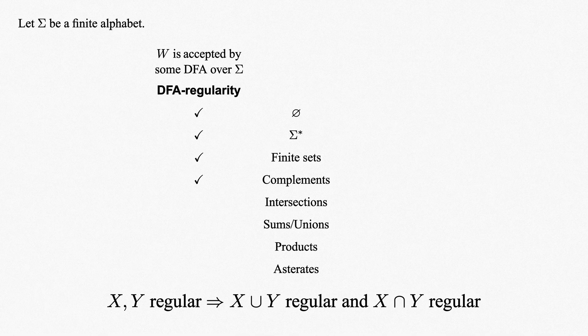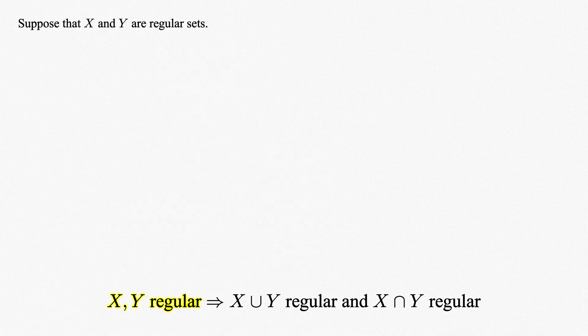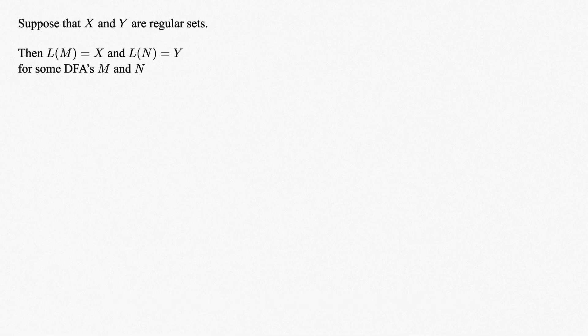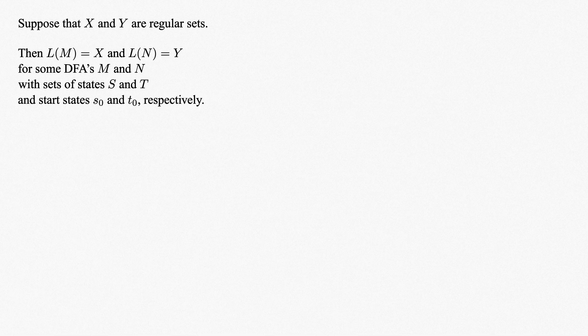Our tool for showing this will be the product construction. Suppose that x and y are regular sets over sigma. By definition of a regular set, there exist some deterministic finite automata m and n that accept the sets x and y respectively. Each has some set of states, which we'll call s and t, and some start state, which we'll call s0 and t0 respectively.